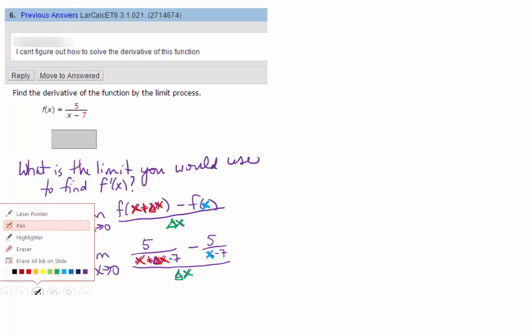Because remember, in the original function, the x is really just a box. So this f of x plus delta x here, we're going to have to put the x plus delta x into the box. Now, how do you evaluate a limit with complex rational expressions, with fractions within fractions?